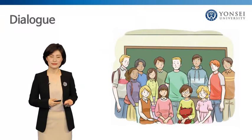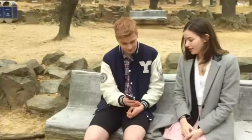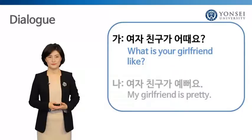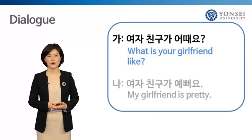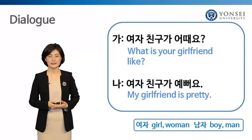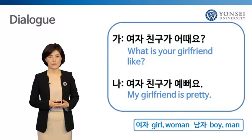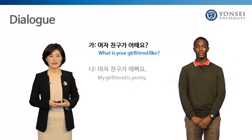You can talk more about your friend using what we have learned so far. Let's watch the video clip. 여자친구가 어때요? 여자친구가 예뻐요. The question was 여자친구가 어때요? — What is your girlfriend like? The man answered, 여자친구가 예뻐요 — My girlfriend is pretty. Here, 여자 means girl. How do you say boy or man in Korean? Right, it's 남자.